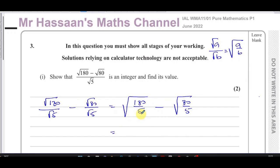So 180 divided by 5, 5 goes into 18, that's 3 times remainder 3, so that's 36 over 5. It's going to be the square root of 36 minus, and 5 goes into 80, that's the square root of 5 into 8 goes 1, remainder 3, so that's 16. So it's going to be the square root of 16.